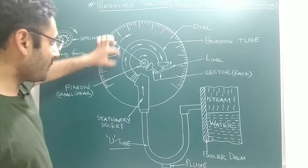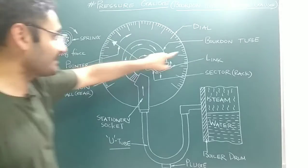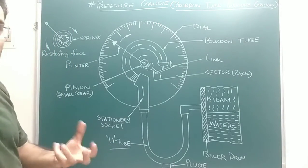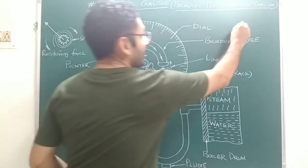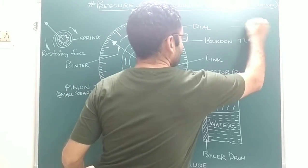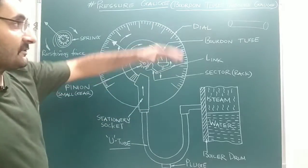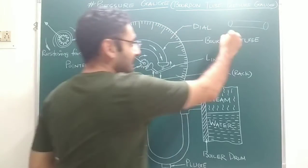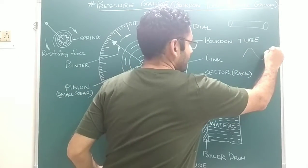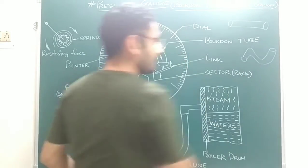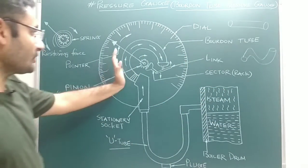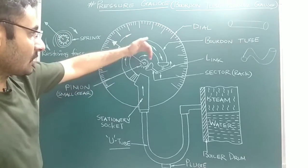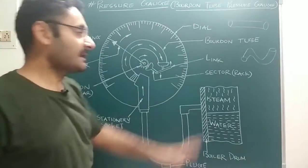After that, the U-tube is connected with one stationary socket. That stationary socket is connected with a C-shaped tube, which is known as the Bourdon tube. It is called the Bourdon tube because if you take a long hollow tube and form it into any shape — in this case the shape of a C — that long hollow tube formed in the shape of C is known as the Bourdon tube.